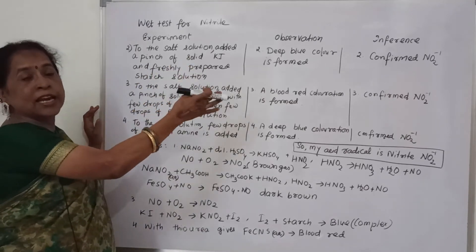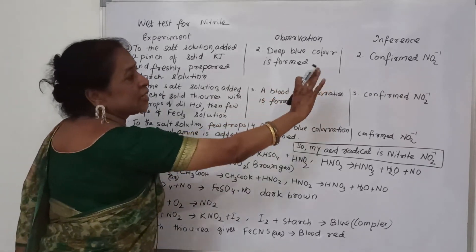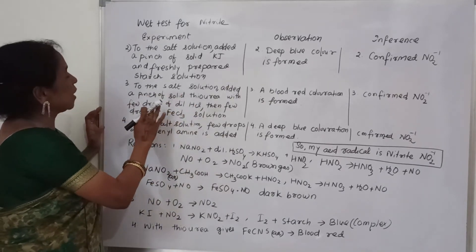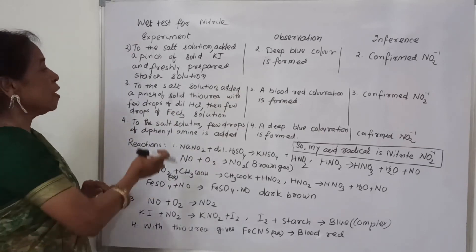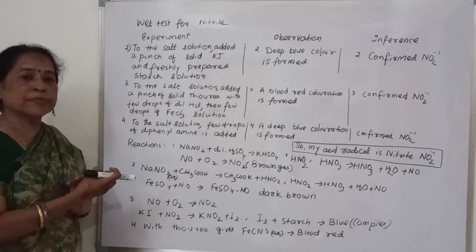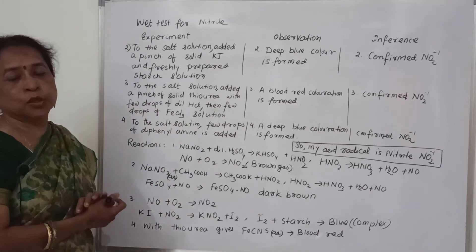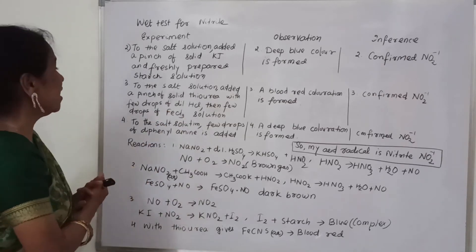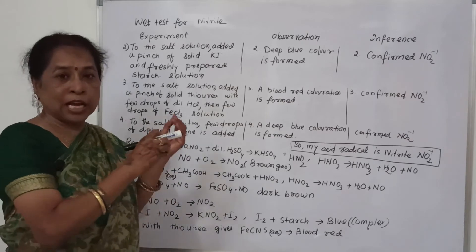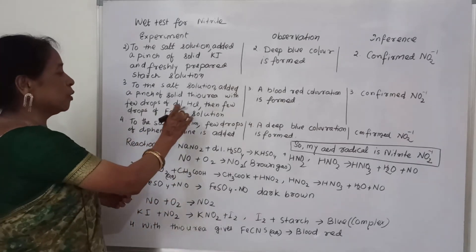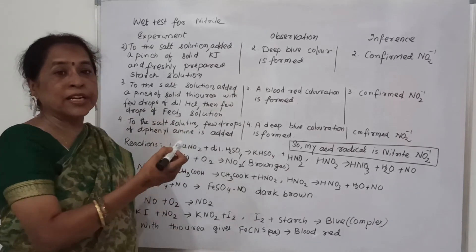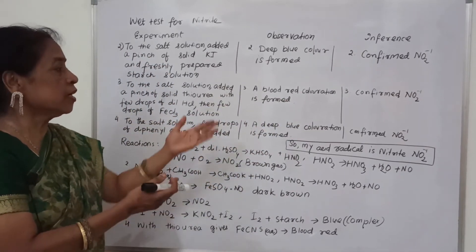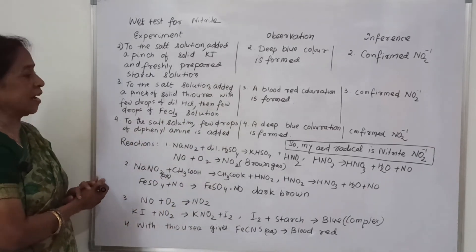To the salt solution, when solid KI and freshly prepared starch solution are added, it confirms nitrite and deep blue color is formed. For the third confirmed test, to the salt solution a pinch of thiourea with 2 drops of dilute HCl and then ferric chloride solution are added. A deep blood red coloration is formed, confirming nitrite.